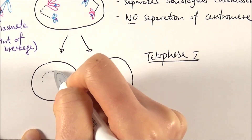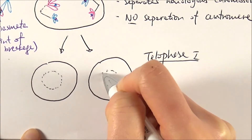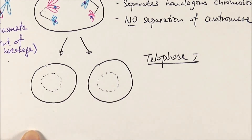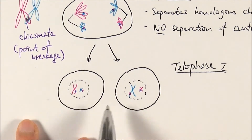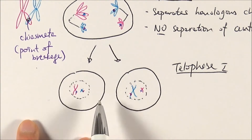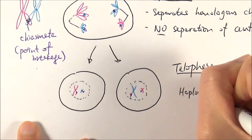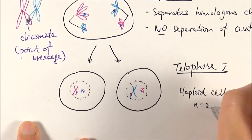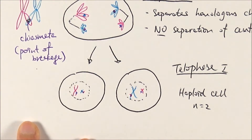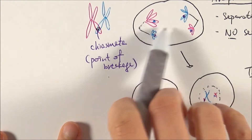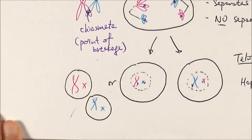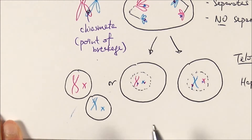Finally we get to telophase one. Same as telophase in mitosis, the nuclear envelope reforms and the chromosomes become relaxed and invisible again. Comparing back to our original cell which had four chromosomes, we now have haploid cells that each have only half the original set of chromosomes. This is why it's important to emphasise crossing over and independent assortment of homologous chromosomes as the sources of genetic variation from the first stage of meiosis.